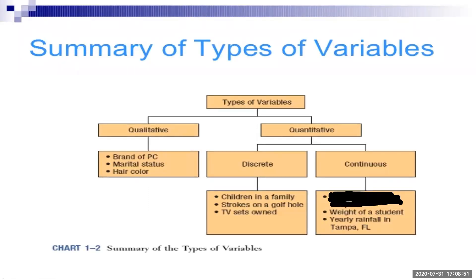This chart shows different types of variables. The two main categories are qualitative versus quantitative. Qualitative is about a quality of the individual — it's the kind of variable that when you measure it, you just get the name of a category.